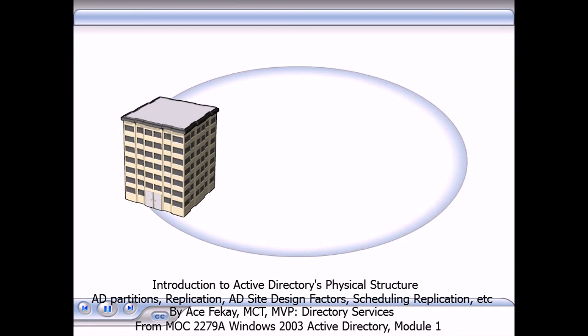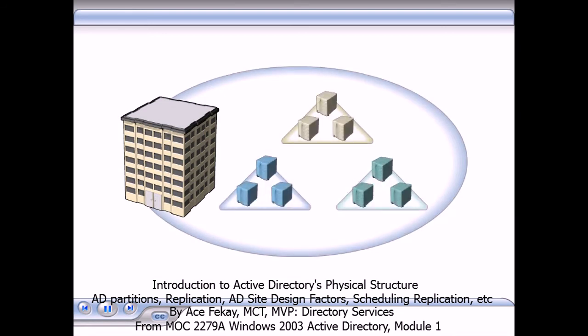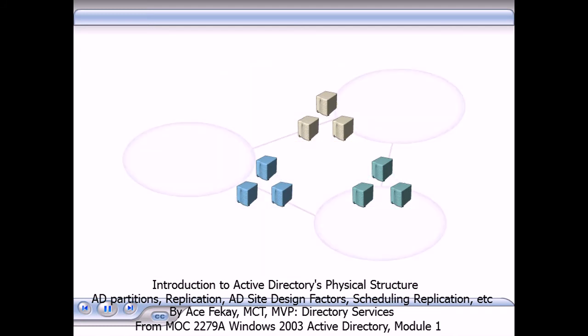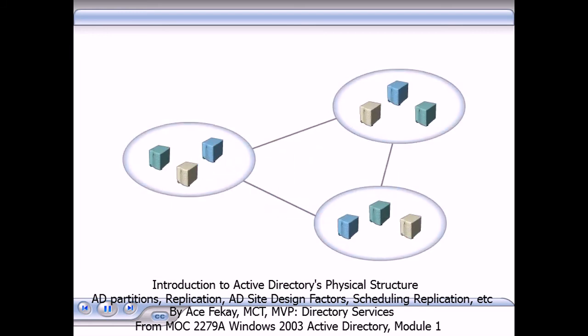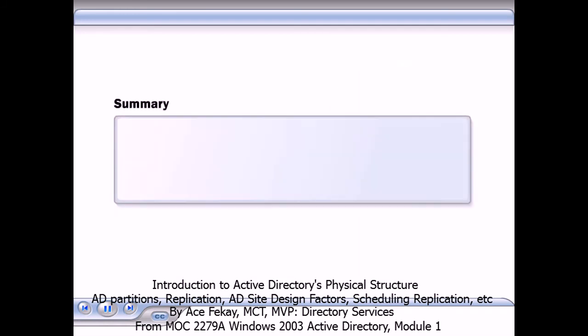If all employees in your organization work at one location but in departments that have different security and policy needs, you may decide to create several domains in one site. Or, if your organization has multiple locations with more than one domain represented at each location, you may decide to create multiple sites that have at least one domain controller from each necessary domain at each site.